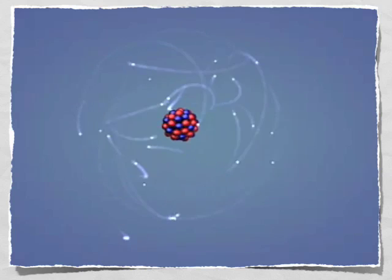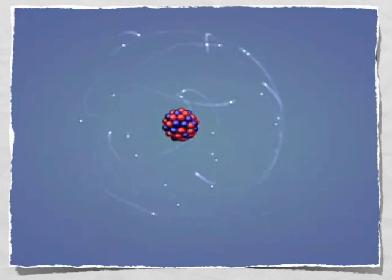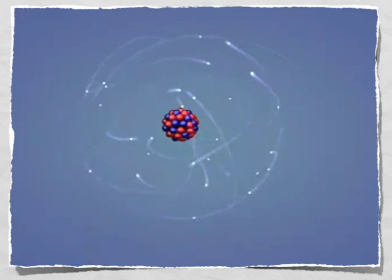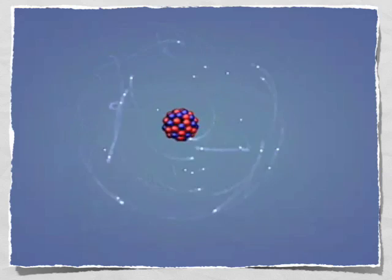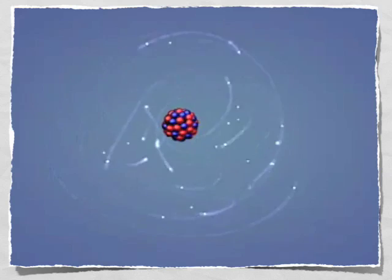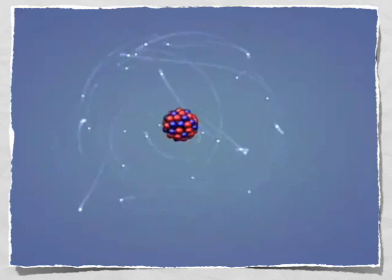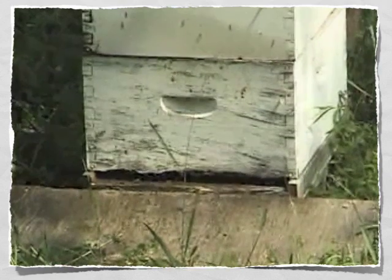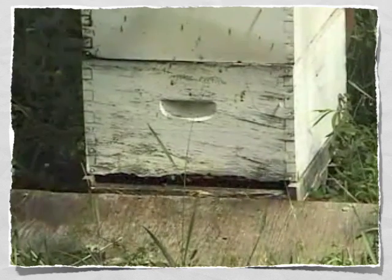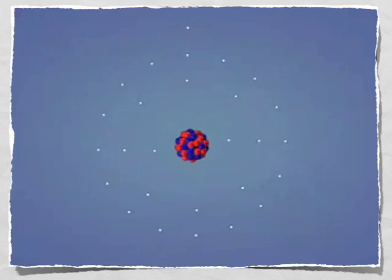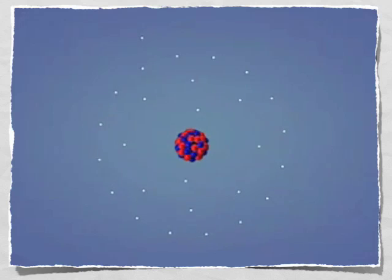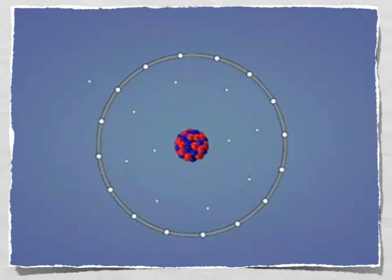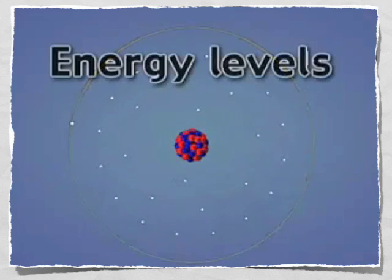Electrons orbit the nucleus at extremely fast speeds. In fact, electrons may speed around the nucleus a billion times in one second. Scientists refer to the general space that electrons occupy as the electron cloud. The electron cloud can be thought of as similar to the space where bees are found swarming around a hive. Electrons are locked into certain areas within the electron cloud, called energy levels.